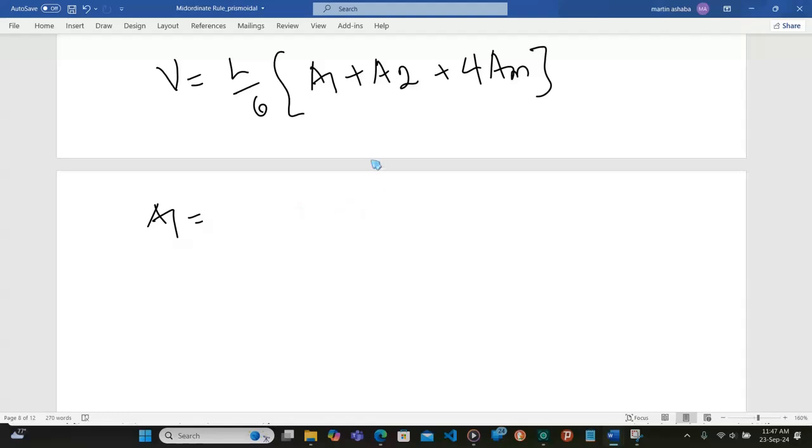Area A1, we know this is a trapezoidal section and it's going to be a half H into A plus B. A is the top, B is the bottom, and H is the depth of the trap at A1.